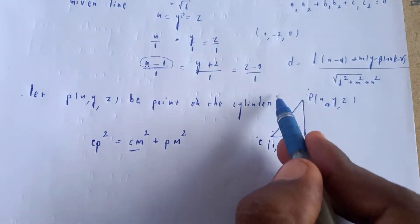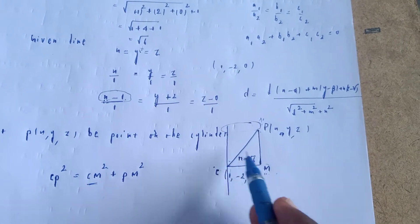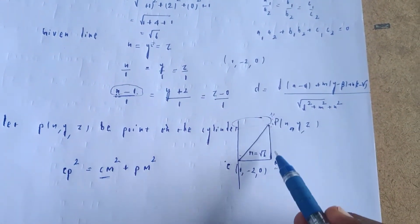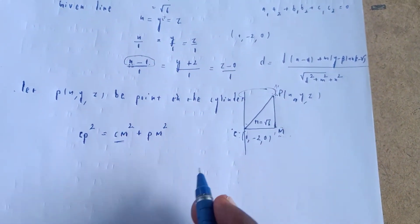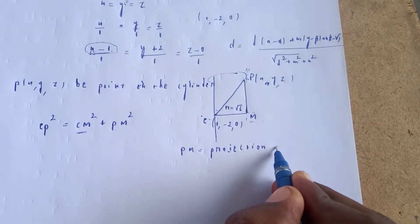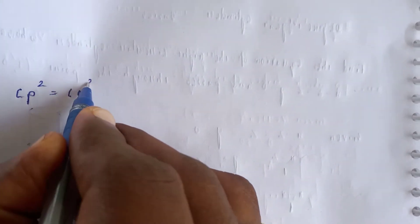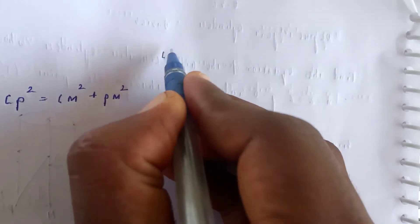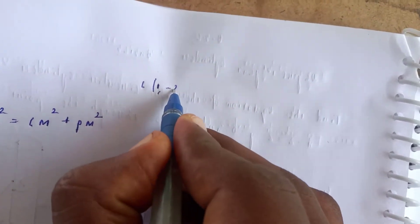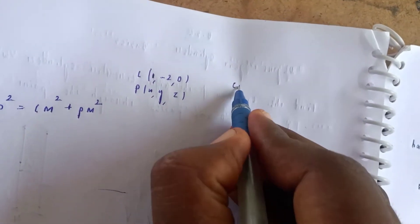CP is the directional line, and PM is the projection of CM onto CP. CP squared equals CM squared plus PM squared. The center M equals 1, minus 2, 0. The point P equals x, y, z. The CP distance and CM distance equals root 6.